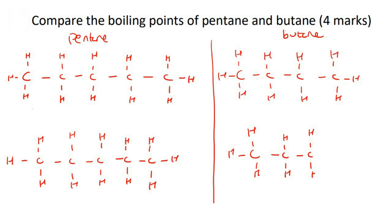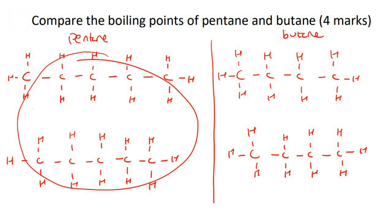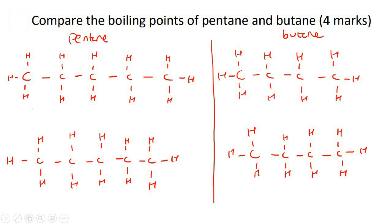Butane just has four carbons. Now, when comparing boiling points for four marks, let me first explain everything in a simplified way and then show you how to write the answer to get all the marks. What you should understand is that pentane, or these pentane molecules, they are alkanes.